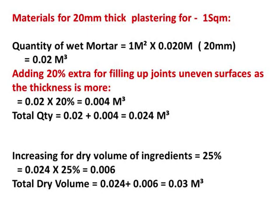For 20 mm thickness, the standard practice is 20% extra. So 0.02 multiplied by 20% equals 0.004 cubic meters additional. Total quantity is 0.02 plus 0.004 equals 0.024 cubic meters. Adding another 25% for dry volume gives 0.006 cubic meters extra, so the total dry volume becomes 0.024 plus 0.006 equals 0.03 cubic meters.